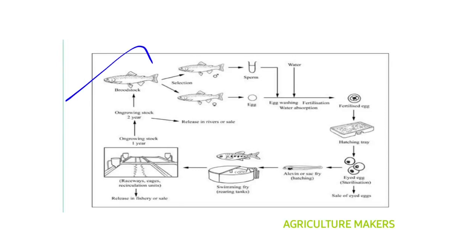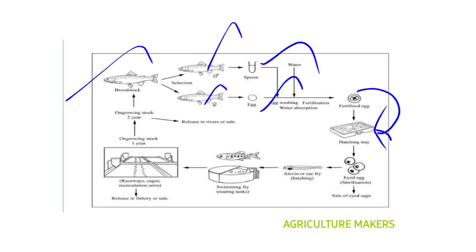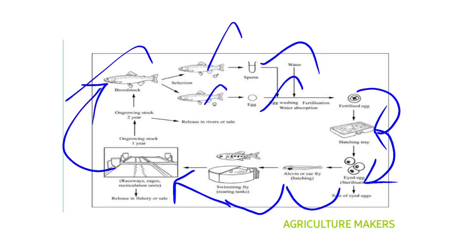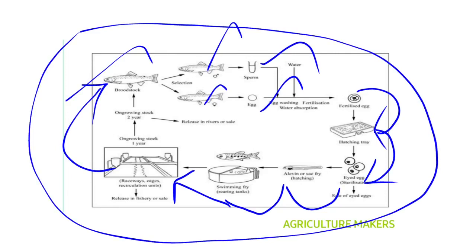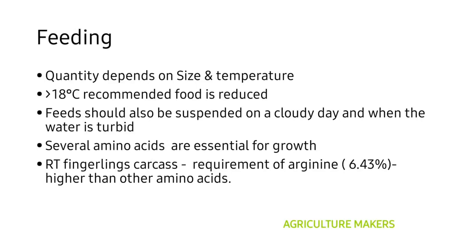The growth cycle starts with brood stock. Male and female are selected from the brood stock, from which eggs are fertilized with sperm. The fertilized egg is grown in a hatch tray. At the eyed-egg stage, it can be sterilized and sold, or hatched and grown into swimming fry. The fry are then placed in the raceway for growth, and from there brood stock is again maintained. The quantity of feeding depends on size and temperature — beyond 18 degrees centigrade, trout loses its appetite, so recommended food is reduced. Feeds should be suspended on cloudy days and when water is turbid.